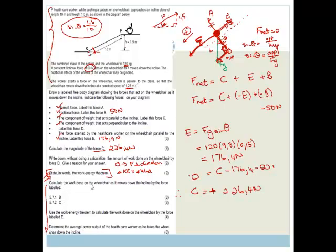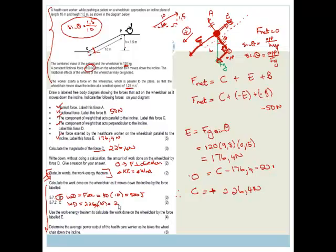Now it says: calculate the work done on the wheelchair as it moves down the incline by force B and by force C. Work done equals F × Δx. B is parallel to the surface, so work done by B = 50 × 10 = 500 joules. Then the work done by C = 226.4 × 10 = 2264 joules.